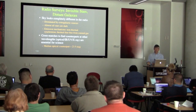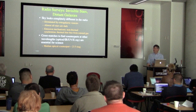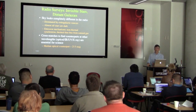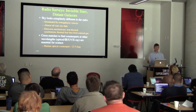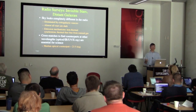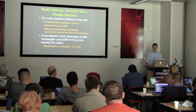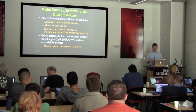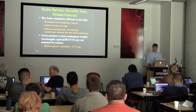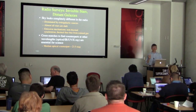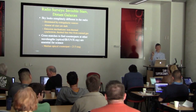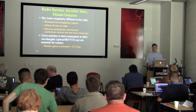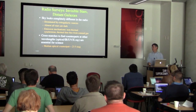Radio sources are very faint in the optical. The median magnitude for optical counterparts to radio sources is about 23rd magnitude — half the radio sources have optical counterparts fainter than 23.5. You need deep optical observations and accurate radio positions to identify which of the many magnitude-23 galaxies on the sky is the actual source of the radio emission.